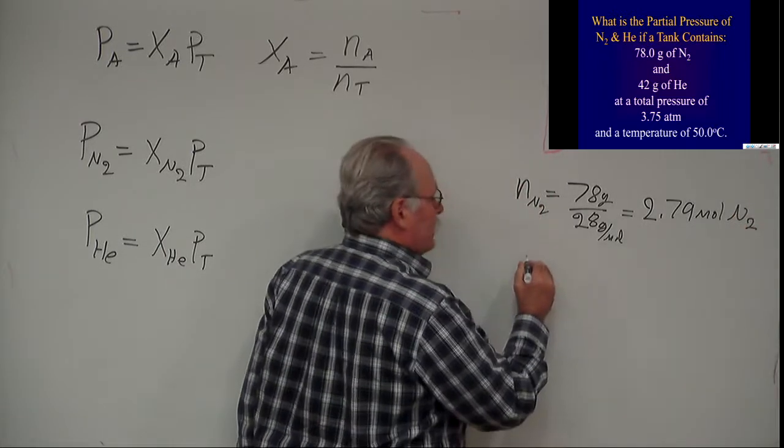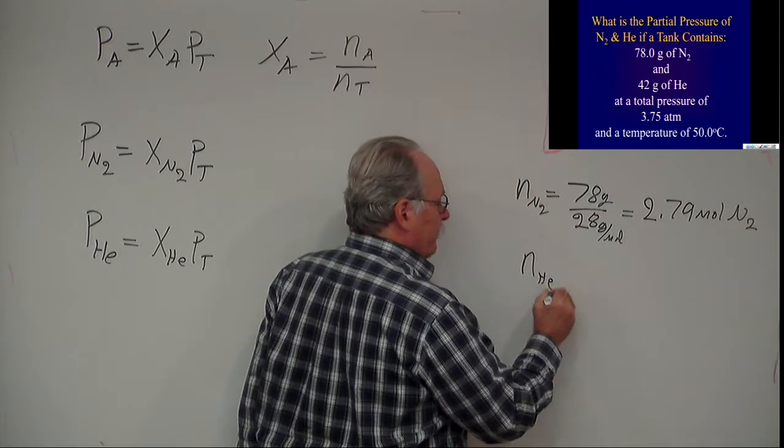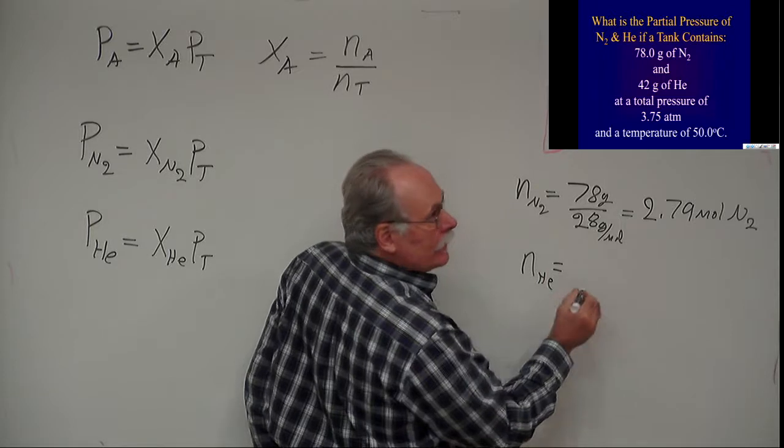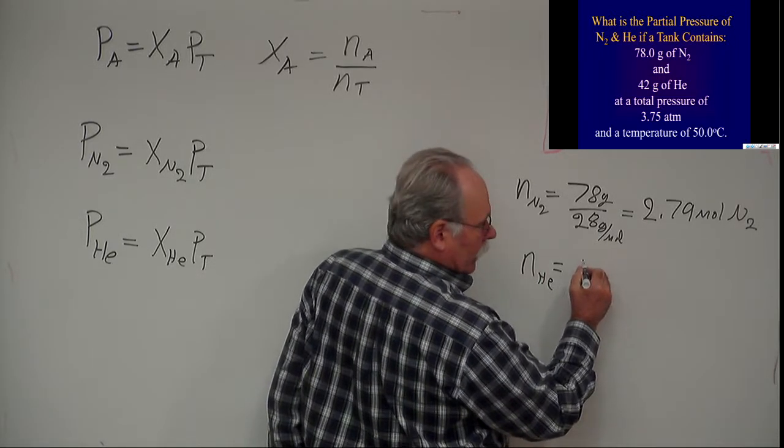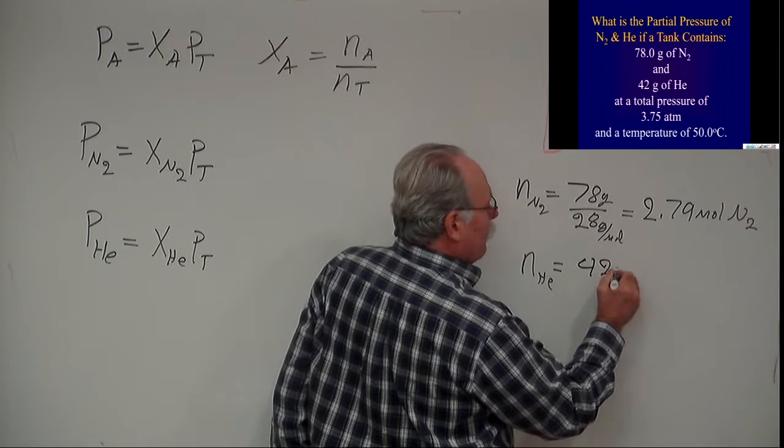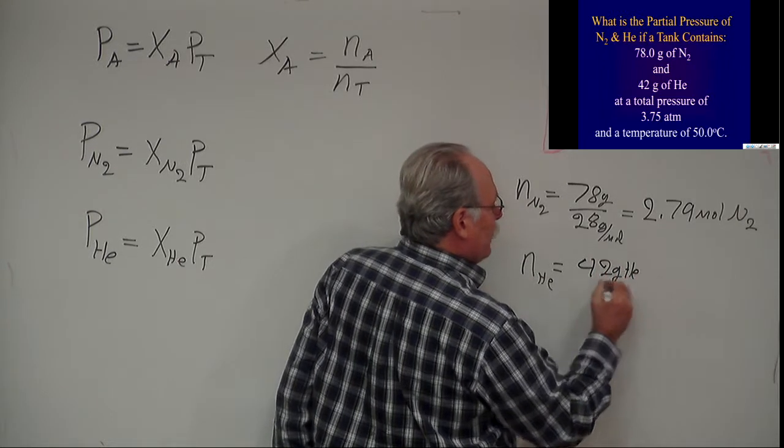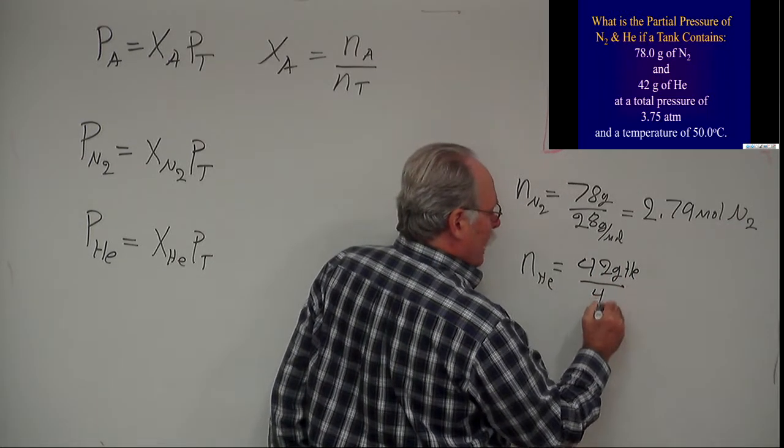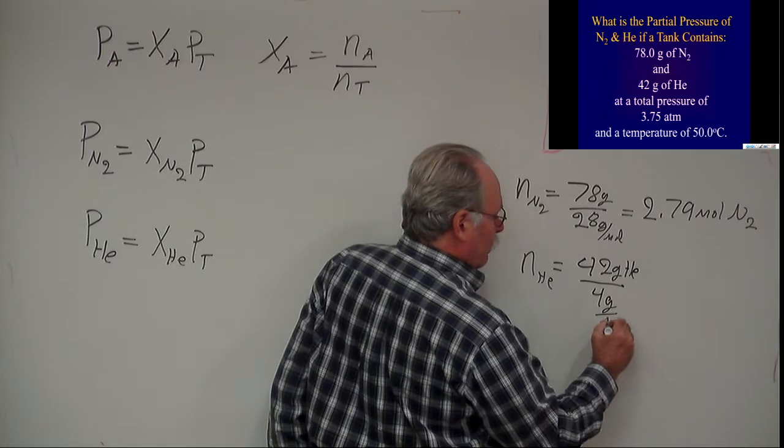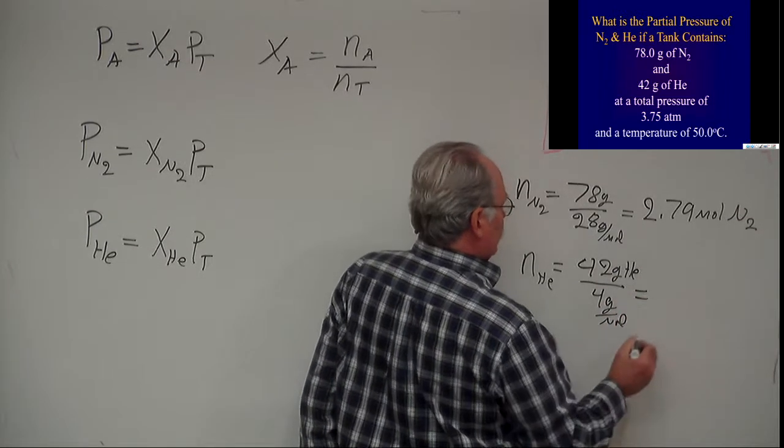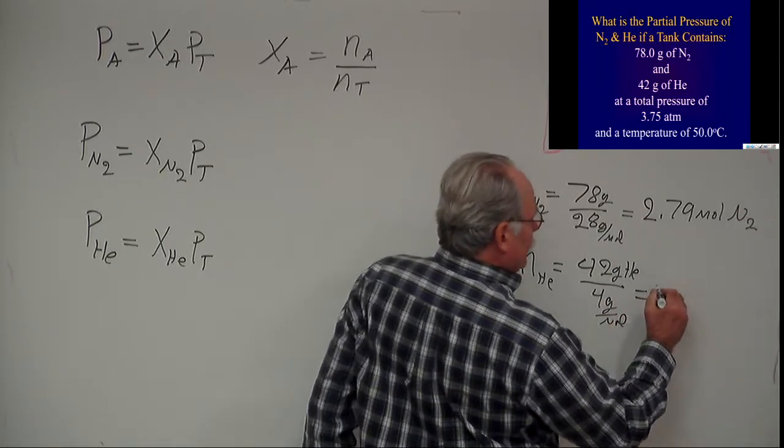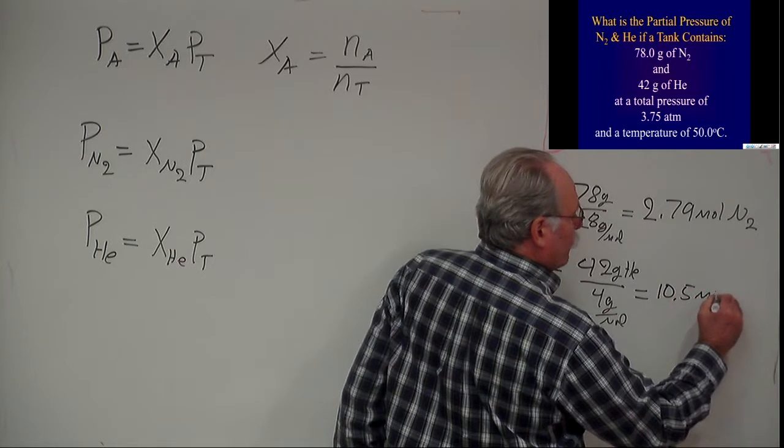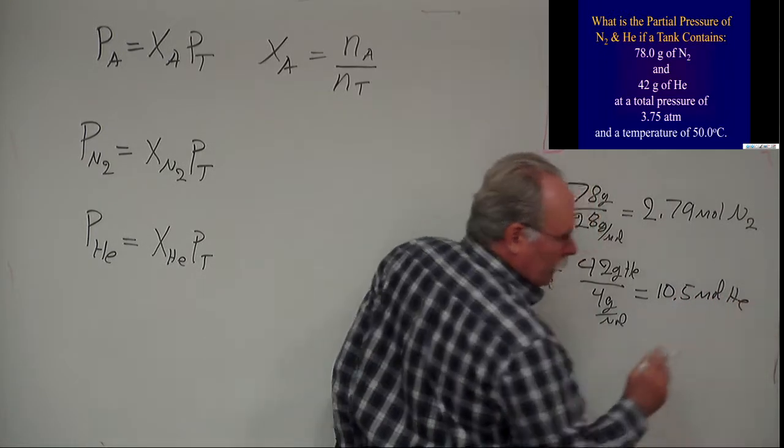Now I need to calculate the moles of helium. We have 42 grams of helium, and it has a molar mass of 4 grams per mole, which gives us 10.5 moles of helium.